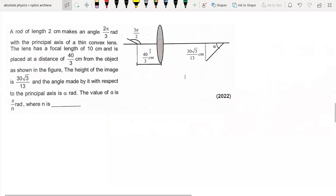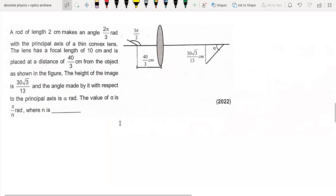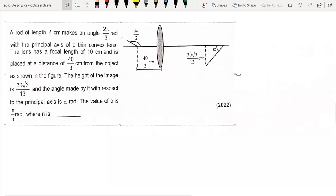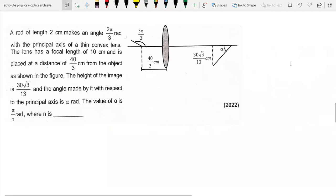Hello all my viewers, today I'm going to solve this question from JEE Advanced 2022. The question is from optics. So let's look at the question. A rod of length 2 centimeters makes an angle 2π by 3 radians with the principal axis of a thin convex lens.